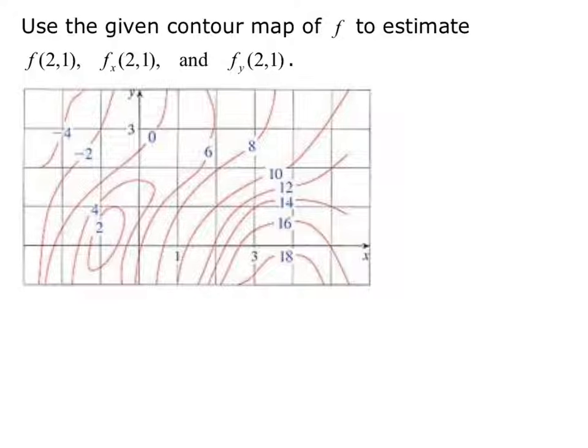We're asked to use the given contour map of f to estimate the value of f(2,1), f_x(2,1) or the partial derivative with respect to x at the point (2,1), and f_y at the point (2,1).